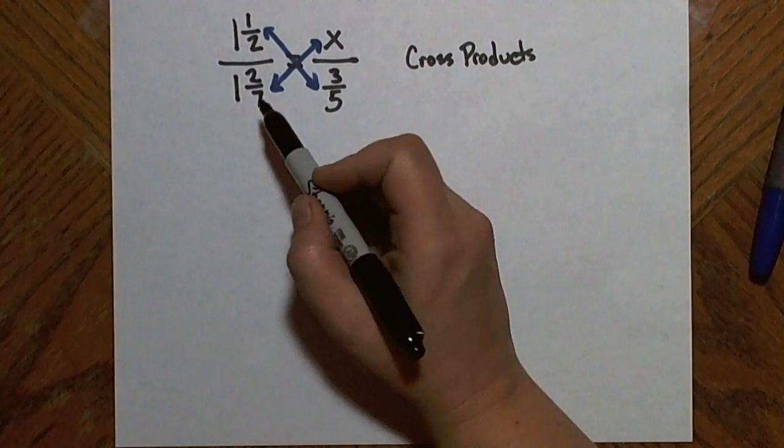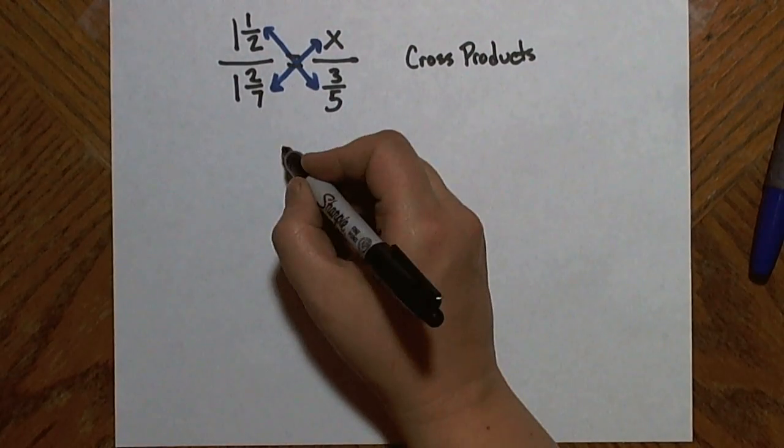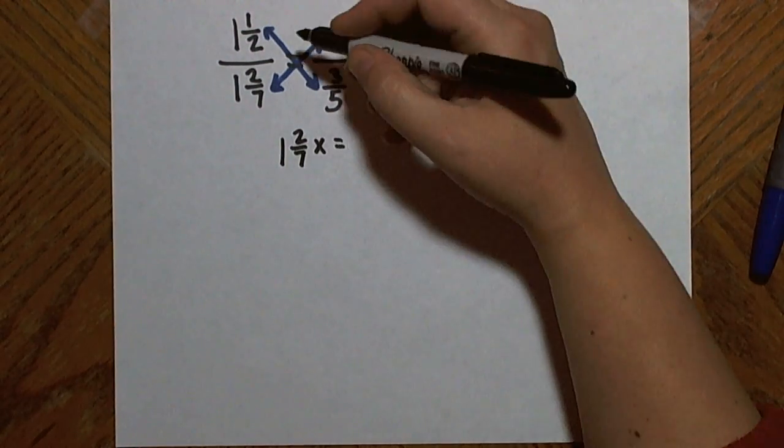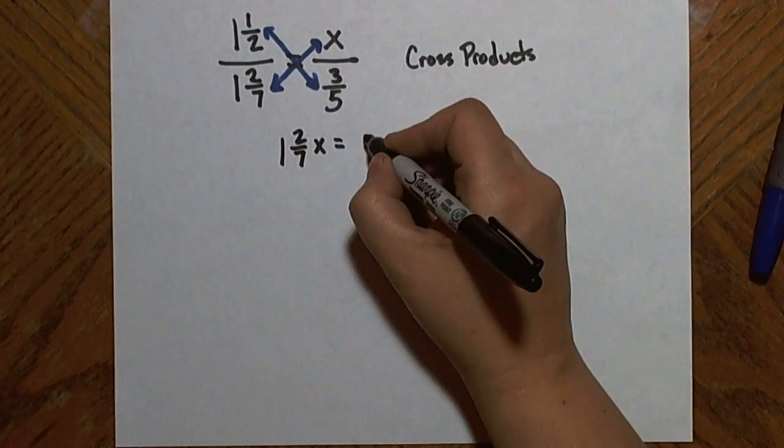So in this problem, I have one and two sevenths times x as one cross product. On the other side, I have one and a half times three fifths.